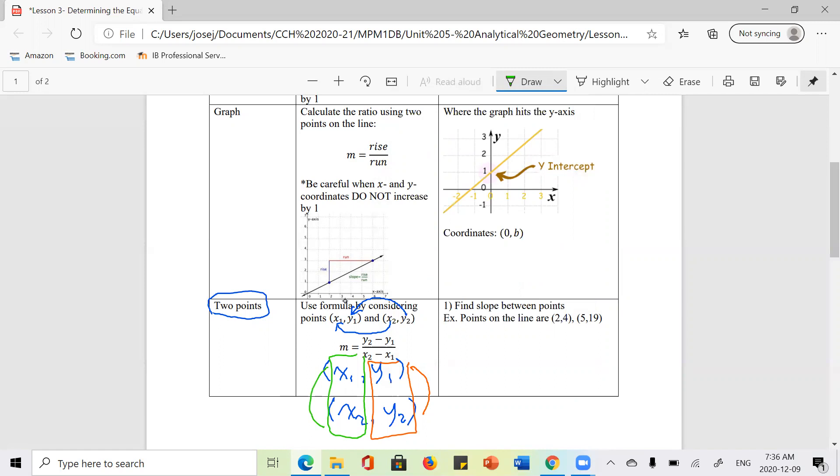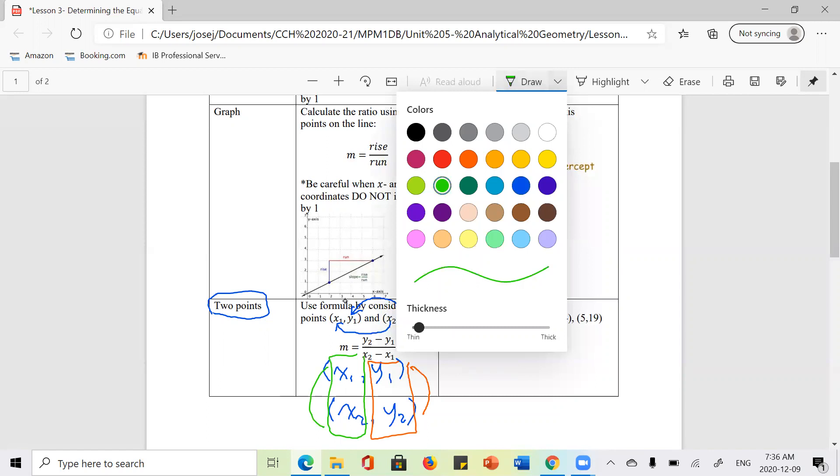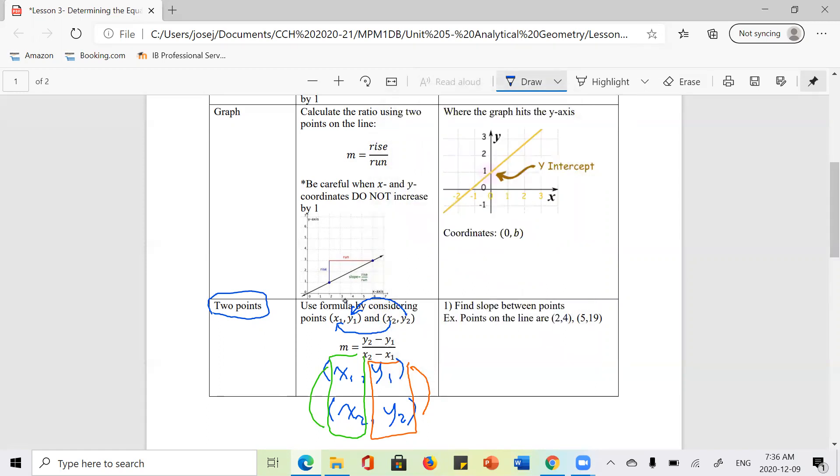So how do you find the y-intercept if you're only given two points? Well, this is where we have to do a little bit more work. So what we're going to do is our first step is actually a repeat of what we did over here. I'm actually going to show you how to solve this with an example.